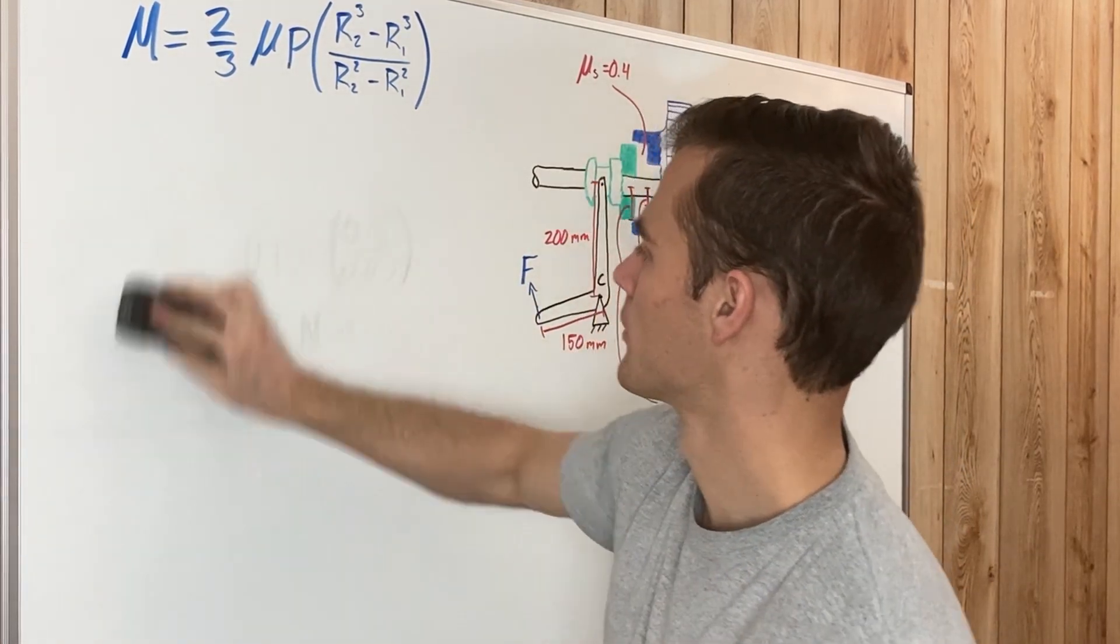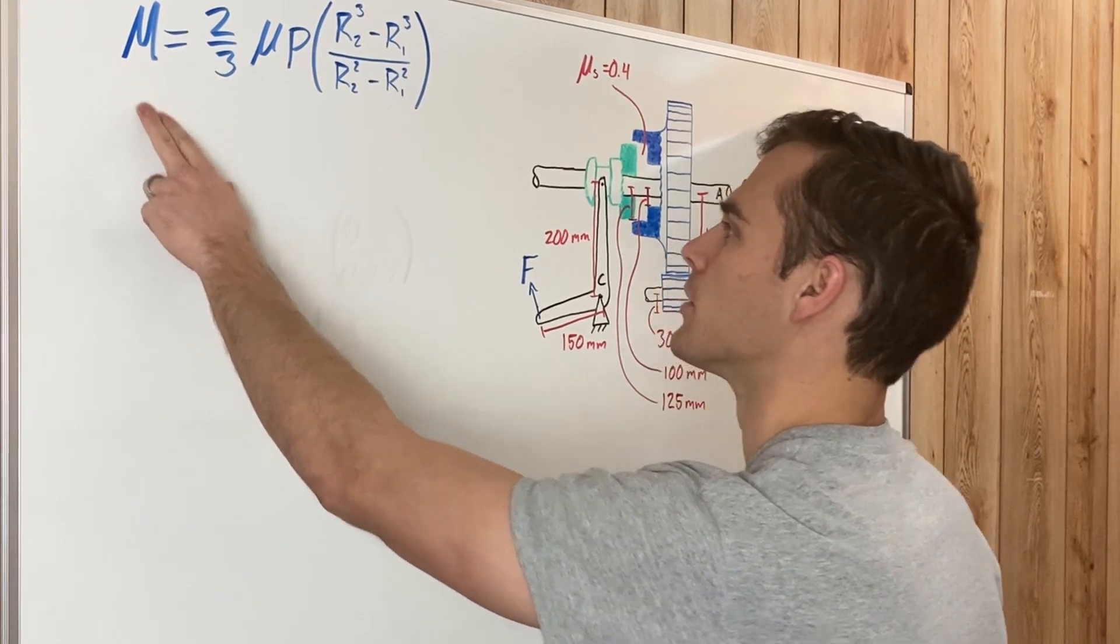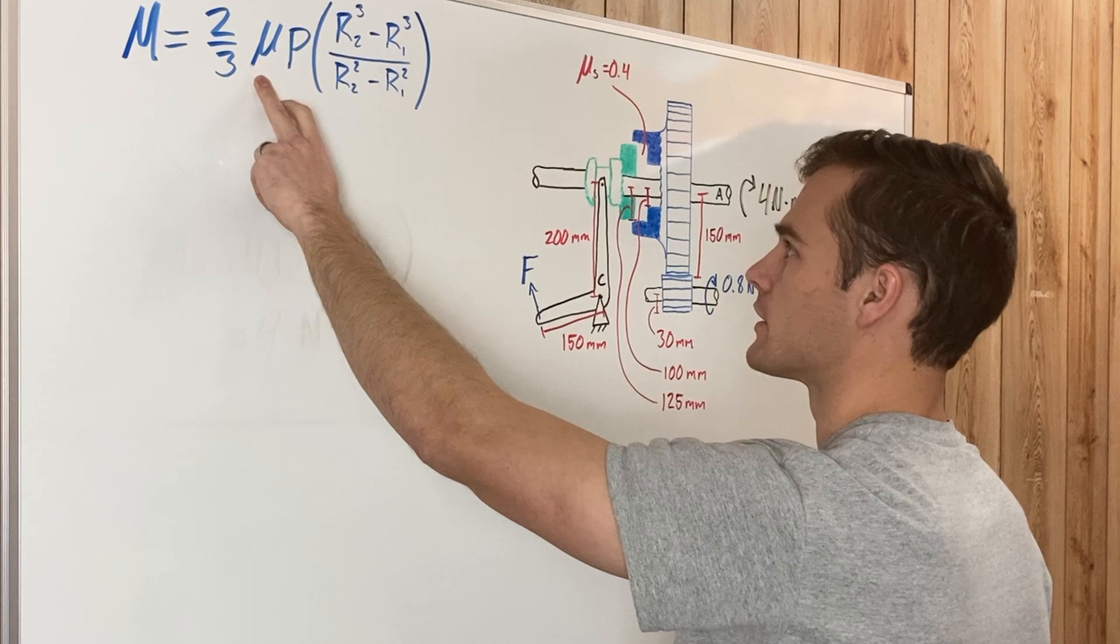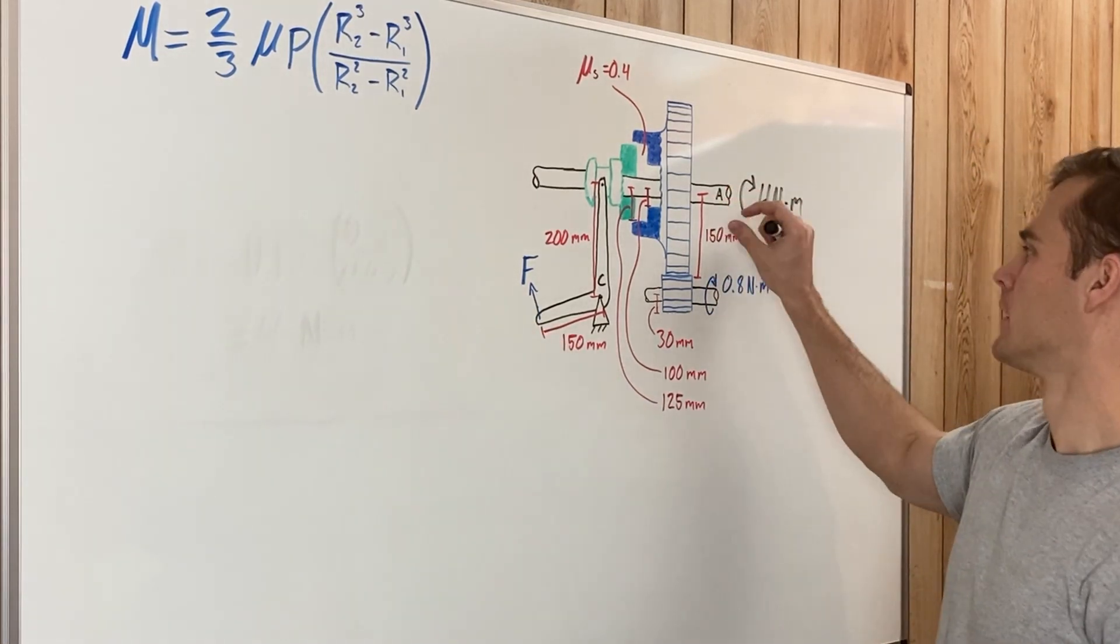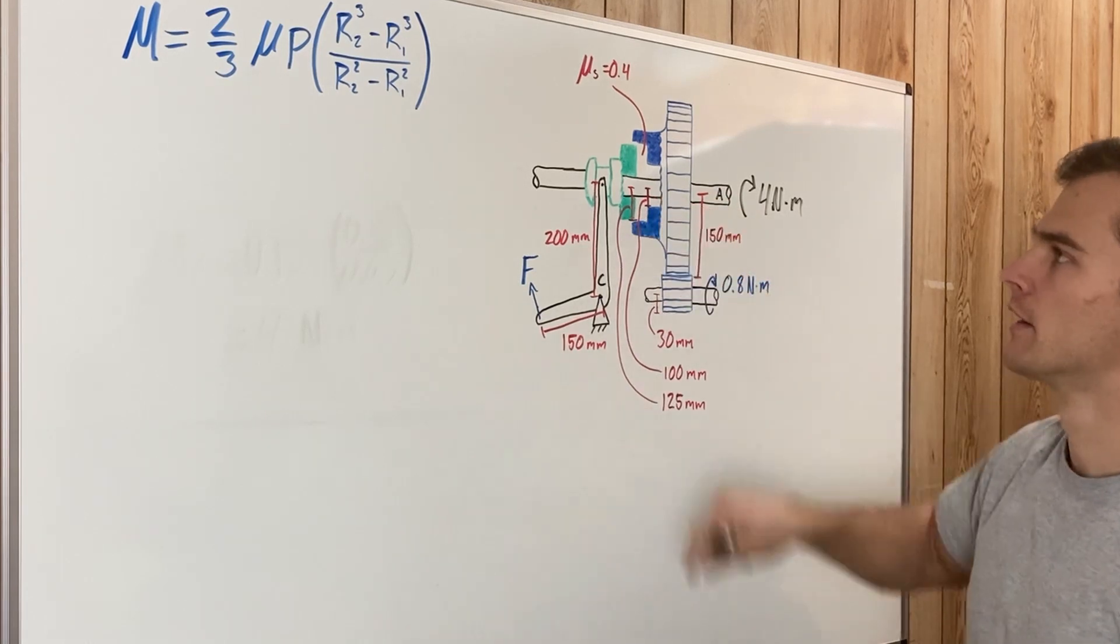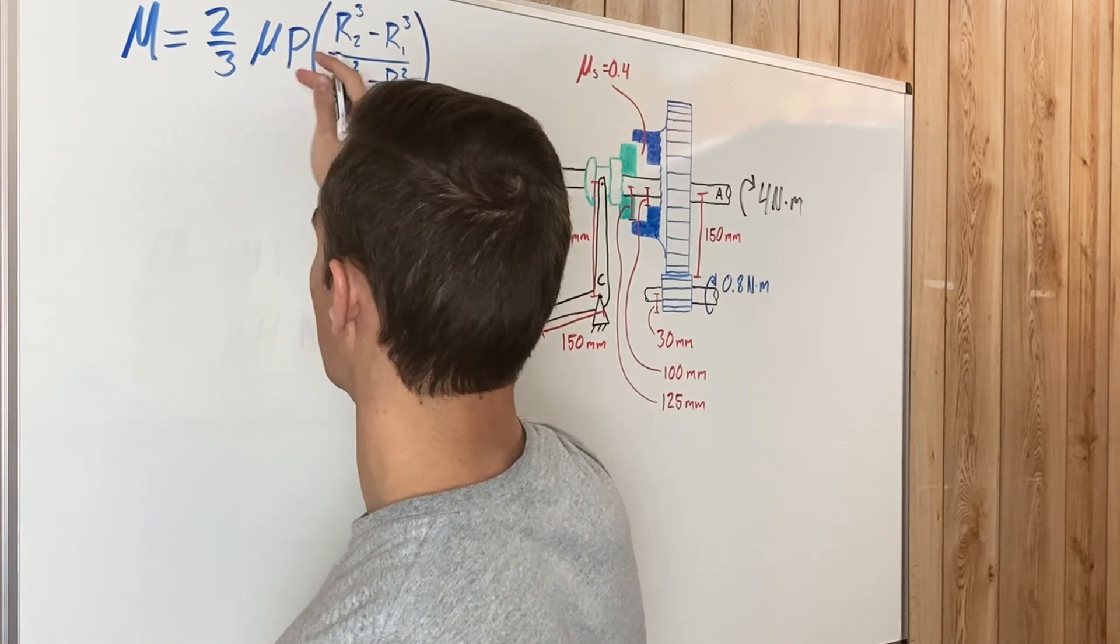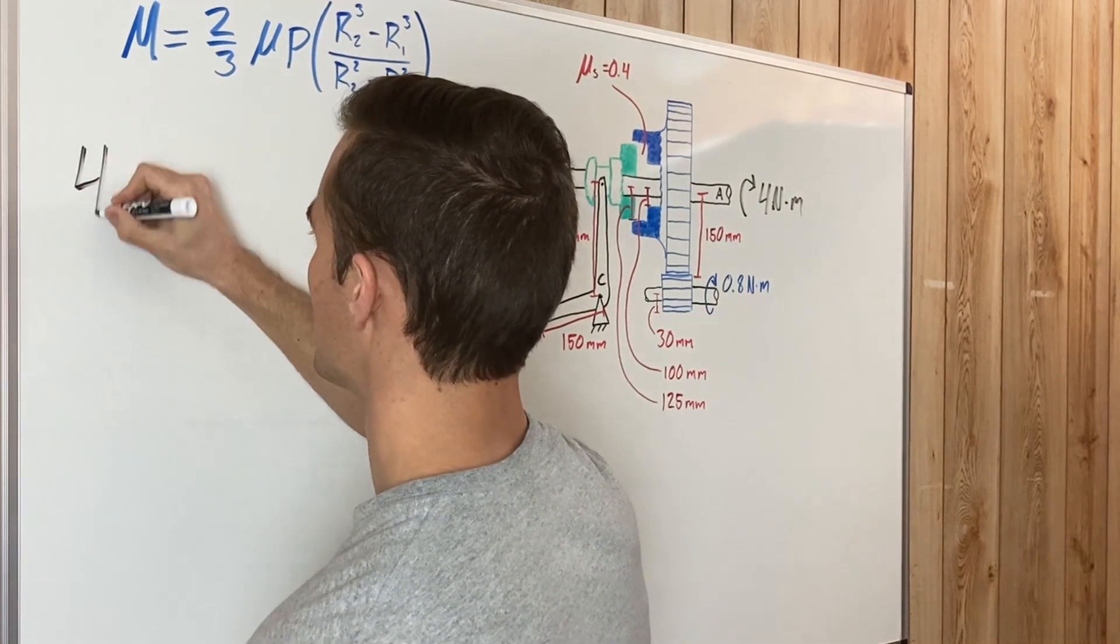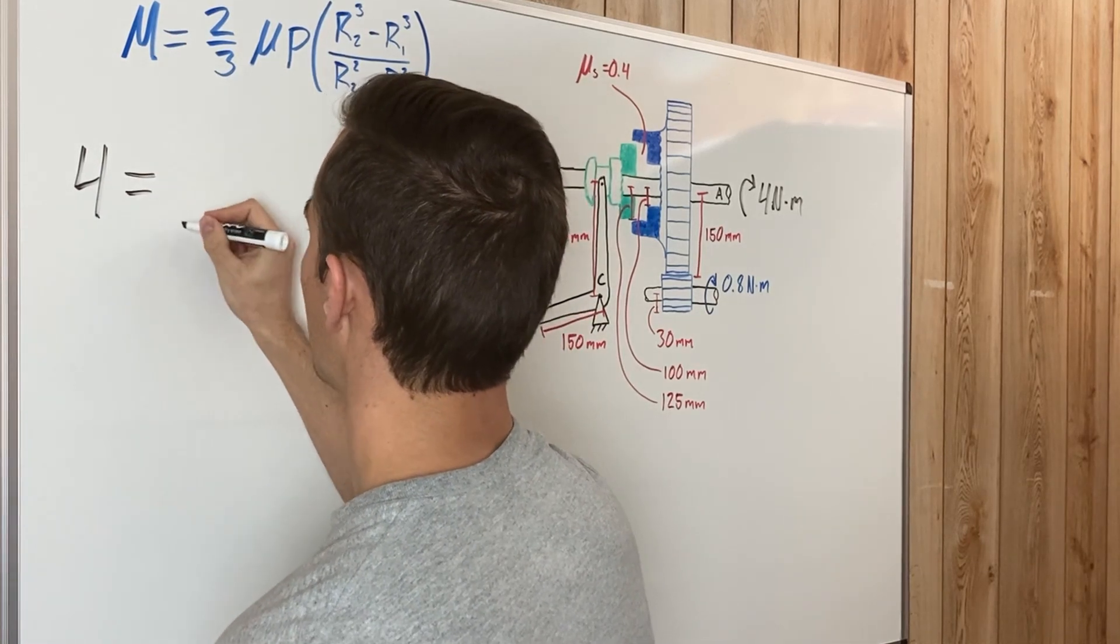Now that we've found that, we have the M variable in our equation. We are given the coefficient of static friction, the mu, and we have the two radii right in here. Solving this equation for P, plugging all these variables we have, we have the 4 newton meters for that moment.